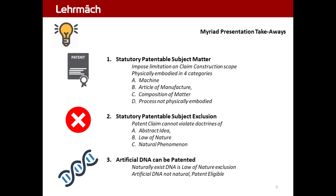The patent application must be physically embodied in four categories: namely, number one, machine; number two, article of manufacture; number three, composition of matter; and number four, process — not physically embodied.